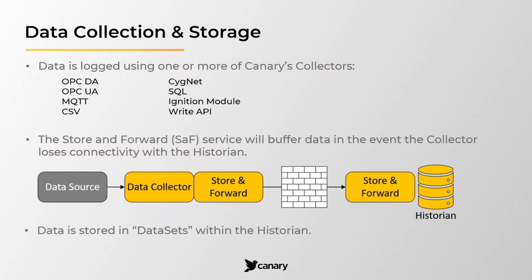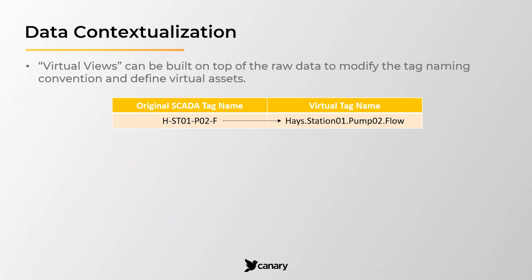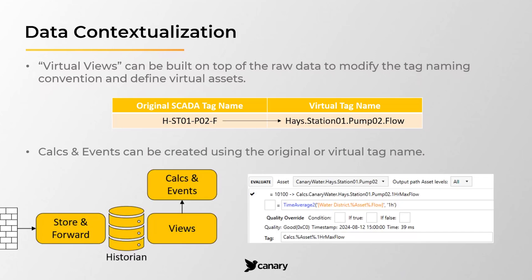Within the historian, data is stored in datasets, which act like folders to help organize the data collected from the various sources. Once stored in the historian, the user has the option of modifying tag names and defining assets through the use of virtual views. Calculations and events can then be created using the original or virtualized tag name to provide additional context. This tag structure is then made available to any client wishing to consume data from the system.